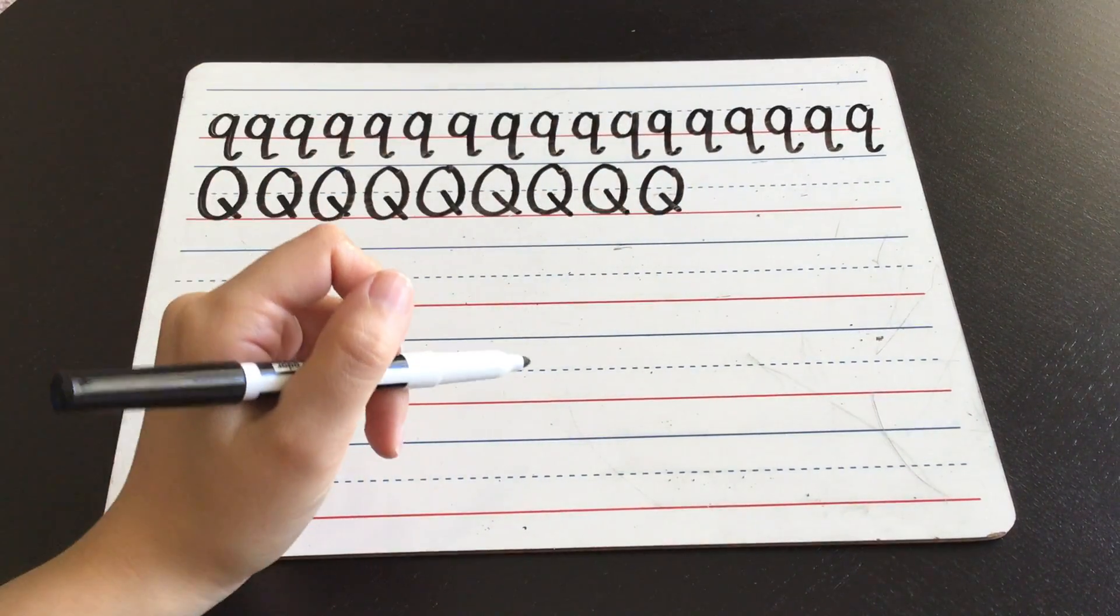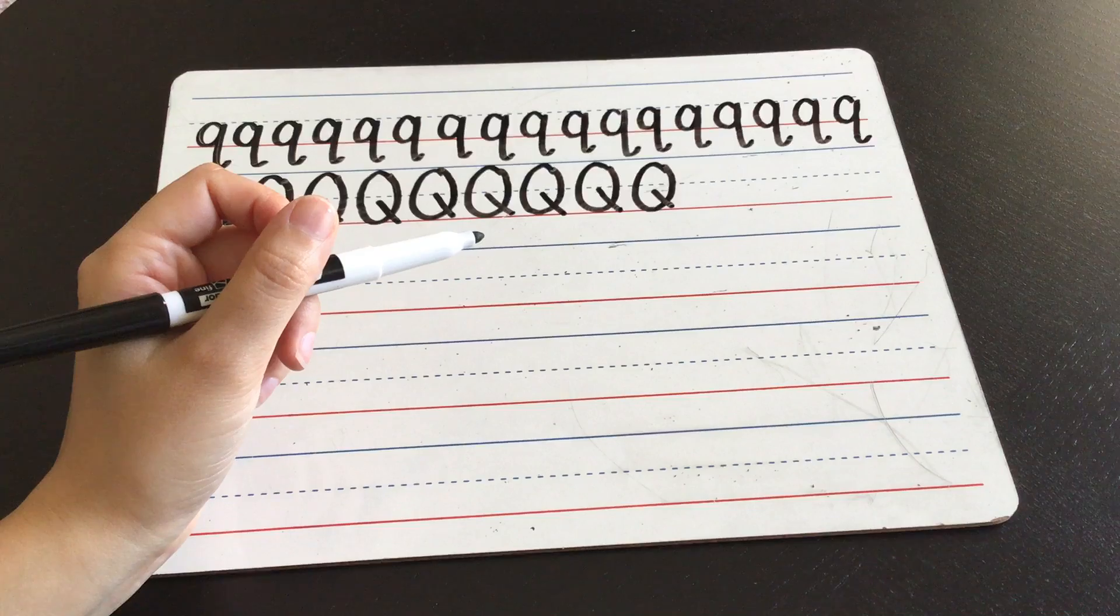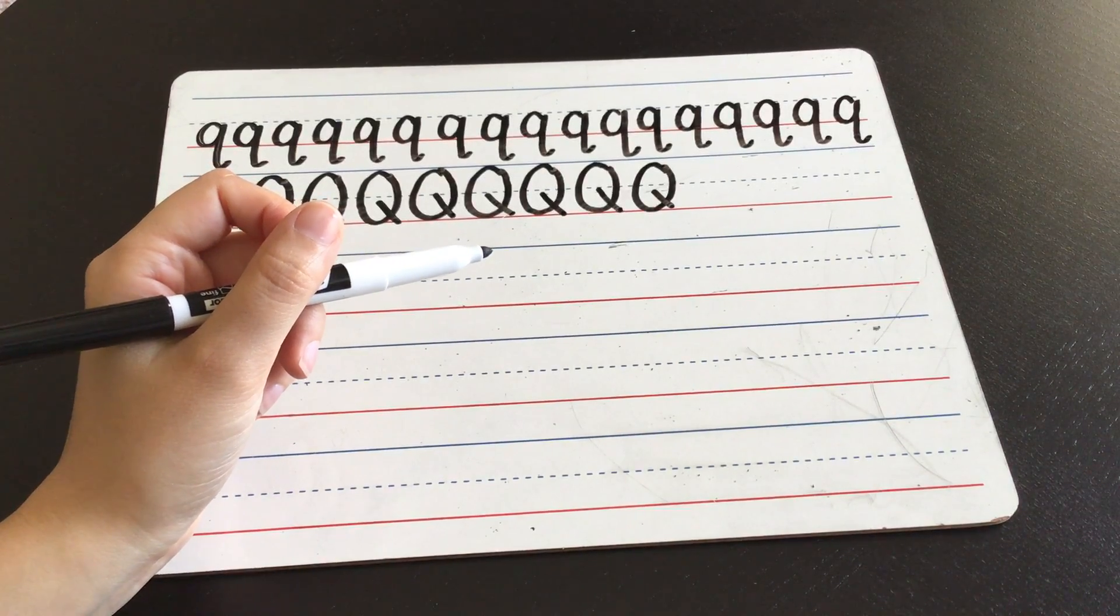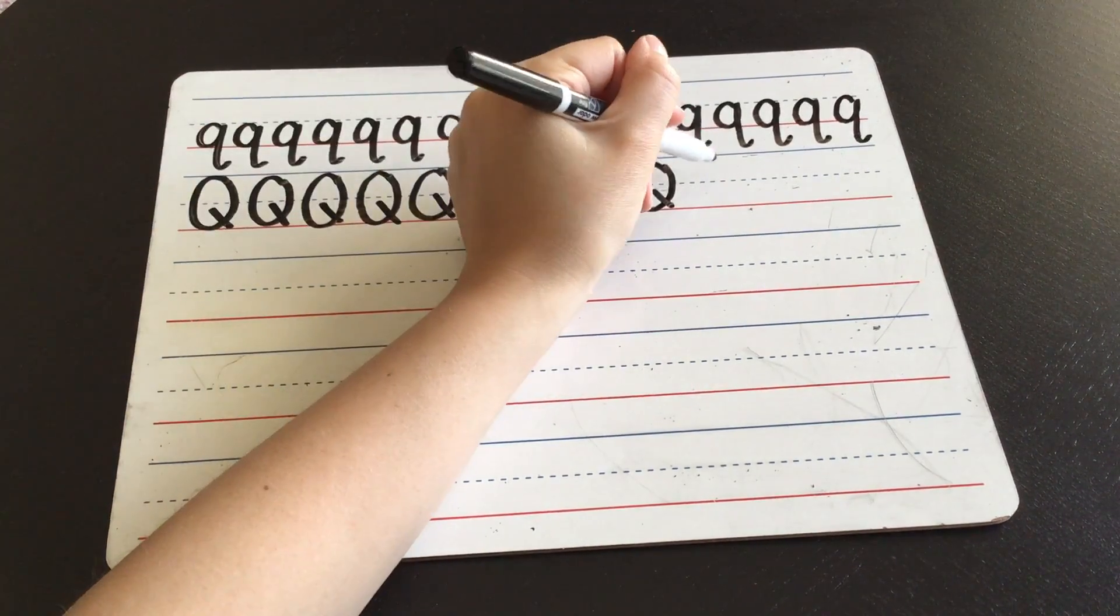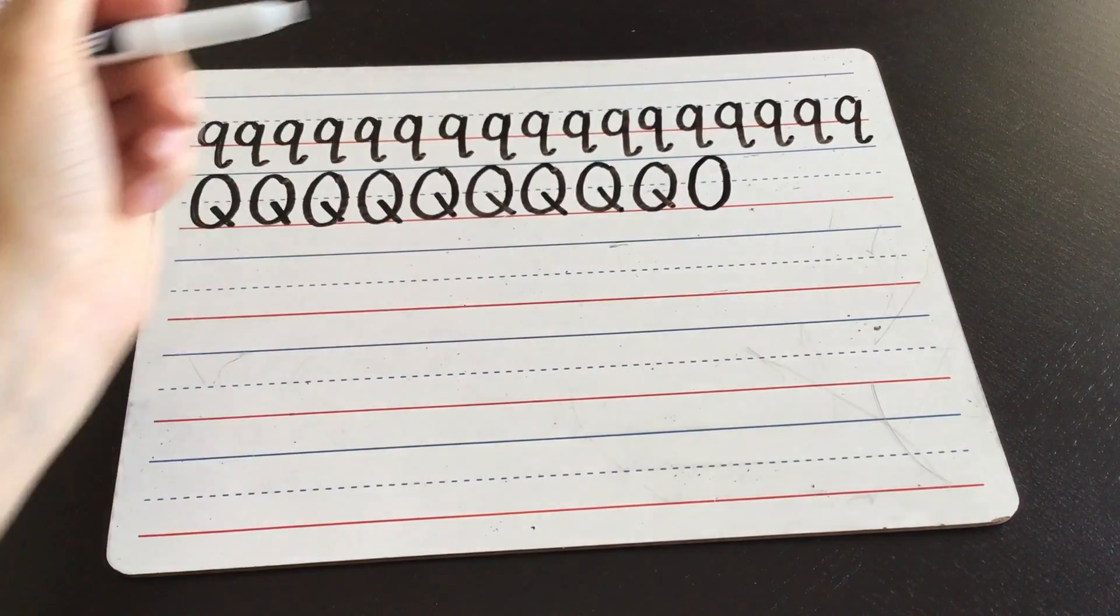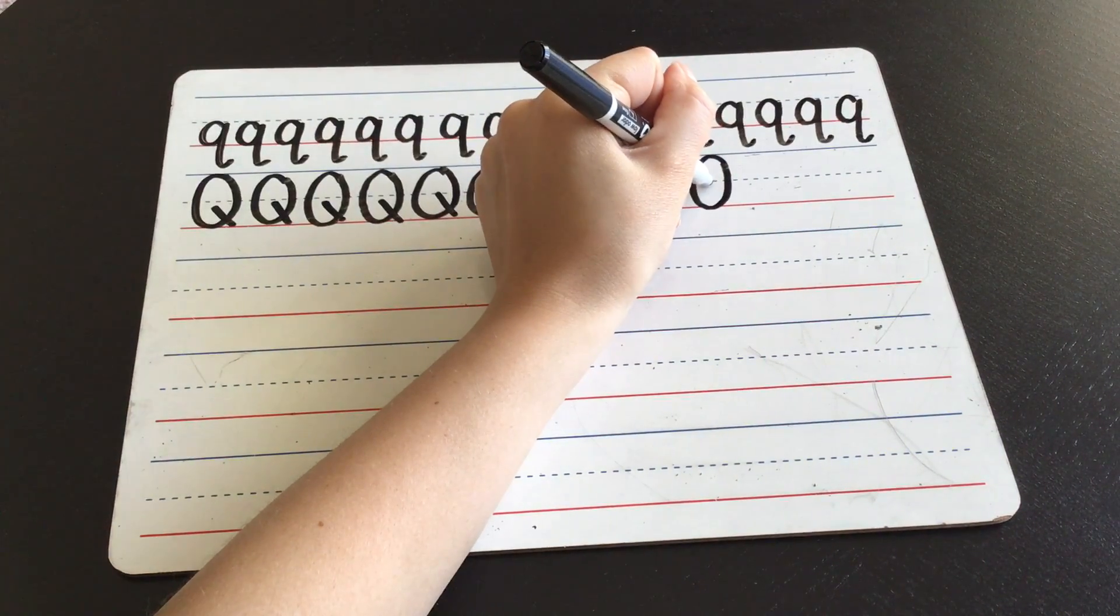All right, when we write a Quarrelsome queen, a capital Quarrelsome queen, we draw first the capital letter O, right, whoop, and then we draw a little stick.